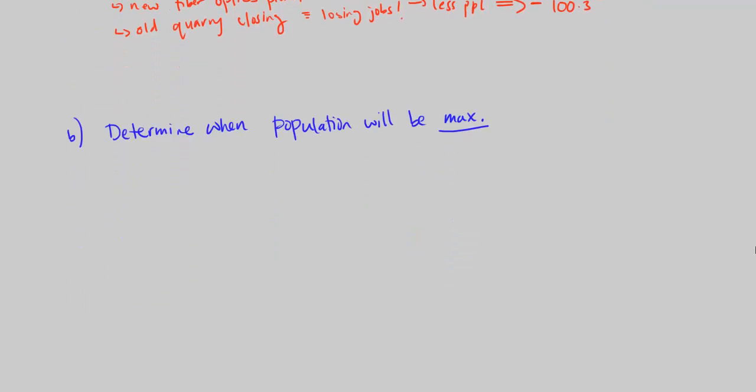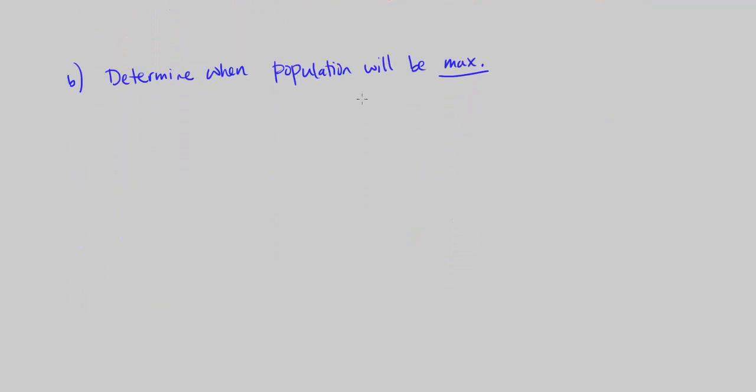Part B, determine when the population will be maximized. Algebraically determine when Woisumi will have the most people. Use your calculator only for numerical calculations. So that means calculator should not find the derivative. Well, we know the population has a maximum or a minimum when the derivative is equal to 0, it will tell us critical points, and will help us find maximums and minimums.